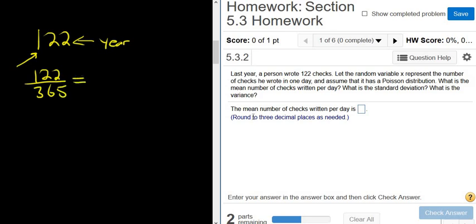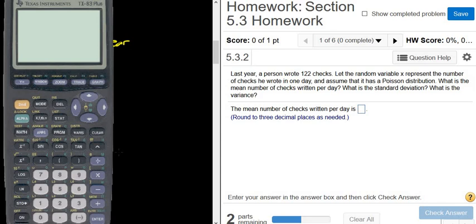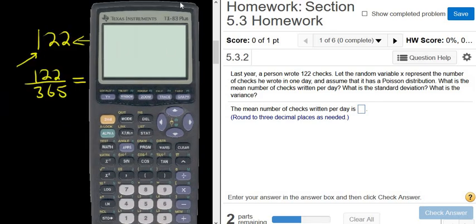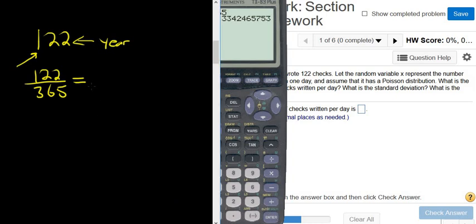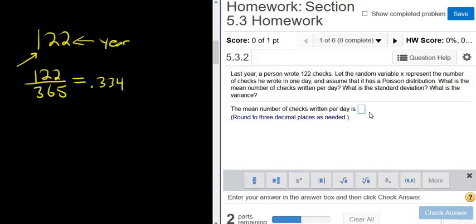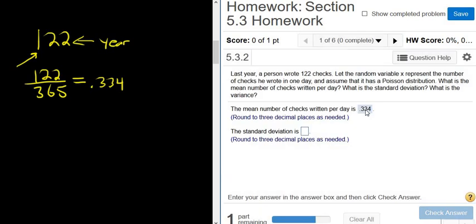Let's try it, and it wants three decimal places. So let me turn the calculator on. So 122 divided by 365. Beautiful stuff. So 0.334. That should be the mean number of checks written per day. Let's try it. 0.334. All right. Got it right.